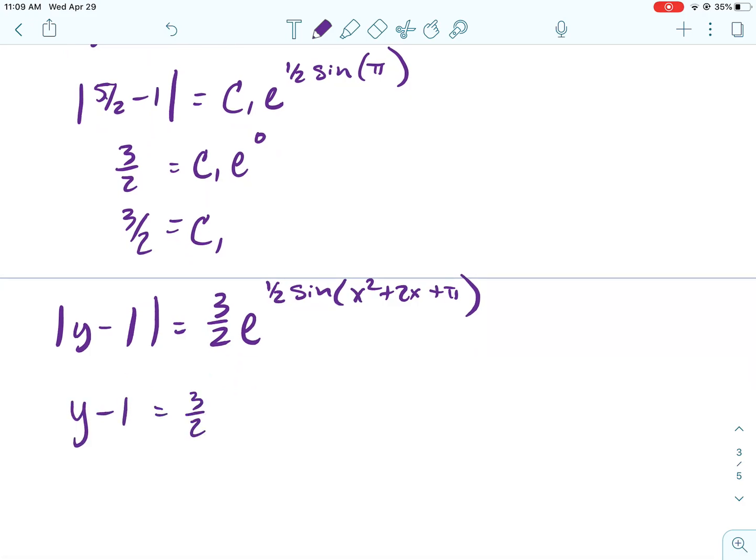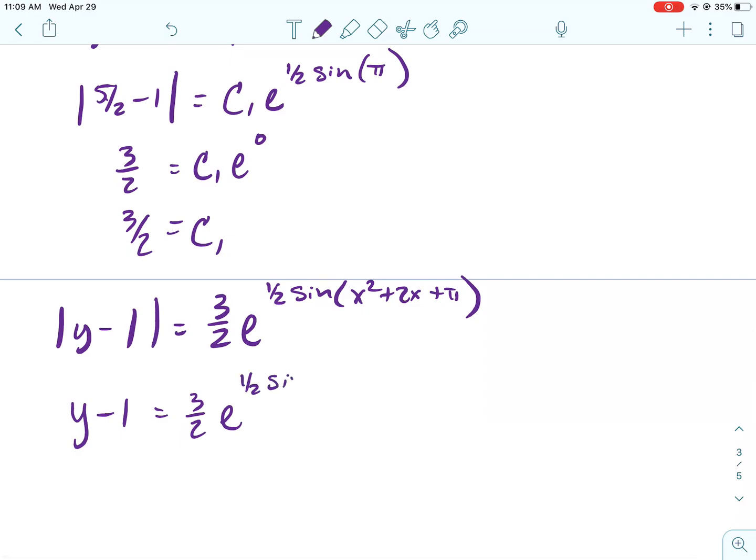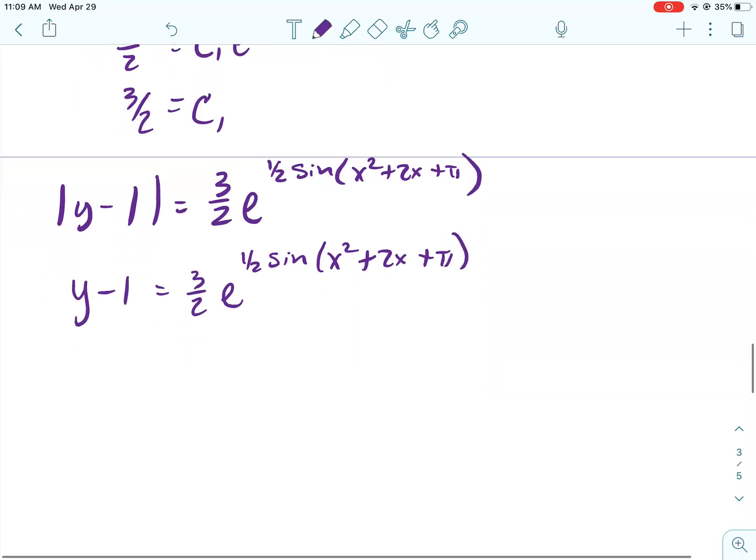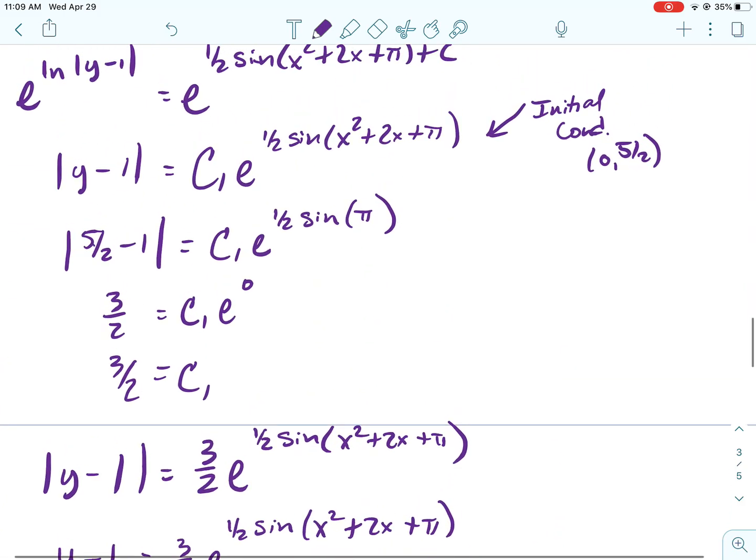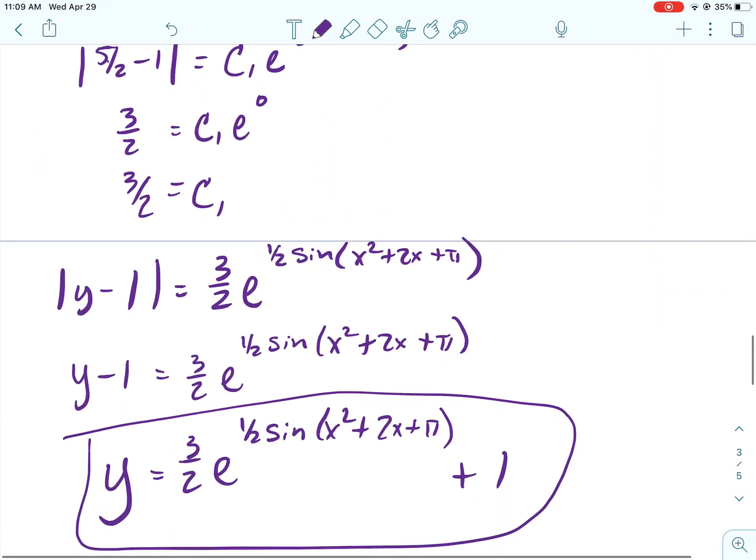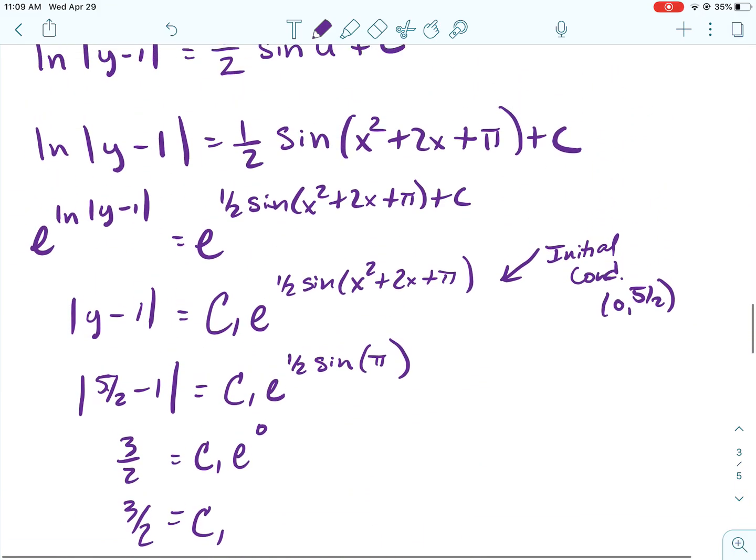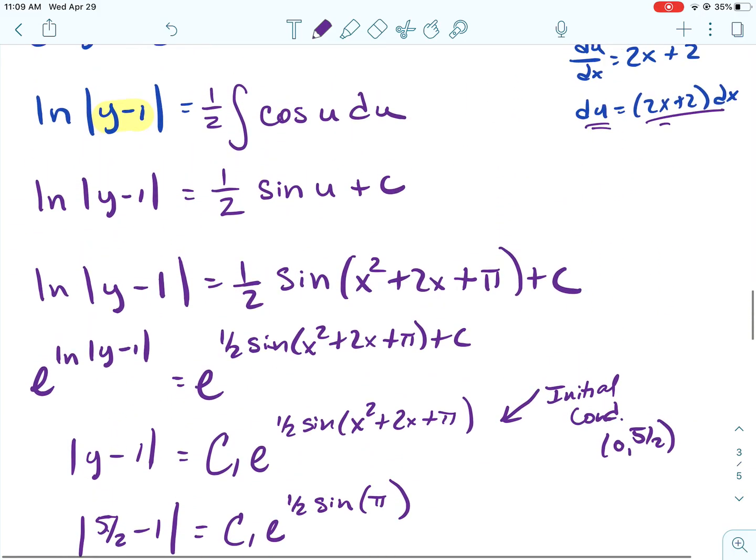And then because we want that, our initial condition is positive, our (y - 1) is going to be positive. And then I'm just going to need to add that 1 over. And there it is. Now I would make sure I just take a second, plug in your initial condition, plug in zero, and just make sure you do end up with your 5/2.